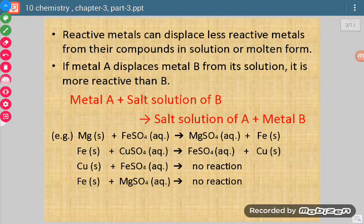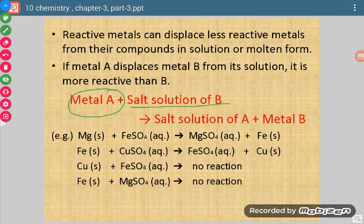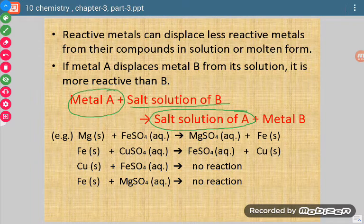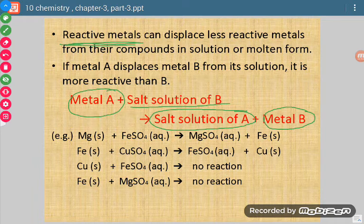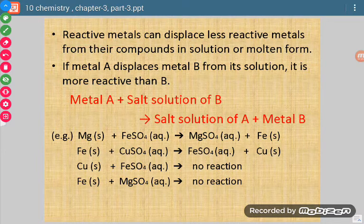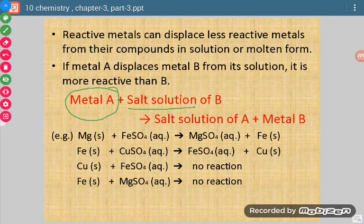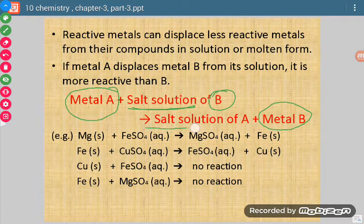In general we can say: when metal A is put in the salt solution of metal B, the product will be the salt solution of metal A and metal B will come out. This will only be possible if metal A is more reactive than metal B. So, a more reactive metal, when combined with the salt solution of a less reactive metal, displaces the less reactive metal.